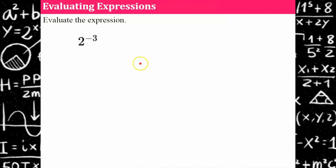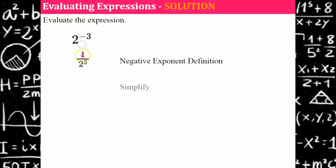Here's another one employing the negative exponent definition. Two to the negative three: I find the reciprocal of the base, which gives one half, and the exponent becomes positive three. One half cubed: one cubed is one, two cubed is eight, so the answer is one over eight.